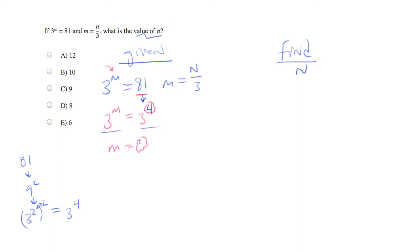Which tells us, therefore, that m equals 4. Once we know m equals 4, we can plug that into our earlier equation to get 4 equals n over 3. Let's multiply both sides by 3 and find out that 12 is equal to n, which is answer choice A.